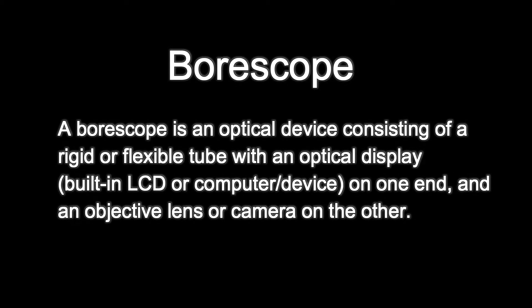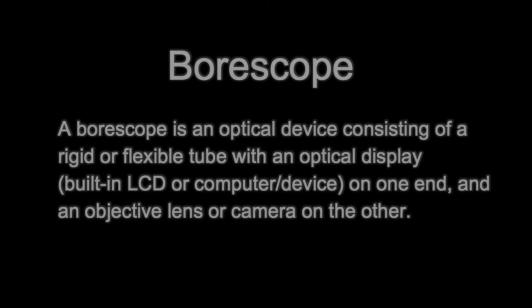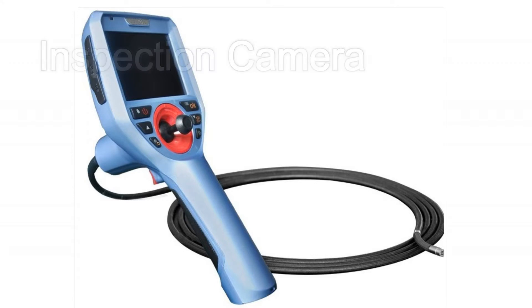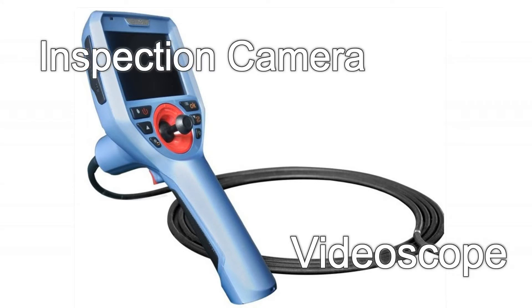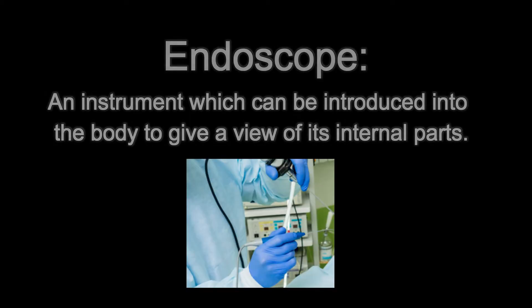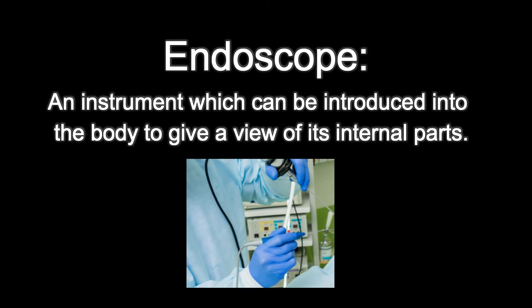First of all, how is a boroscope defined? A boroscope is an optical device consisting of a rigid or flexible tube with an eyepiece or digital display on one end and an objective lens or camera on the other, linked together by an optical or electrical system in between. This tool is also known as an inspection camera or video scope. The word endoscope is actually the term used to describe the same tool, but is specifically used for medical purposes on human or animal bodies. This term has sometimes been incorrectly used to describe boroscopes for industrial use and has caused some confusion, which is why you see many product listings with multiple titles.